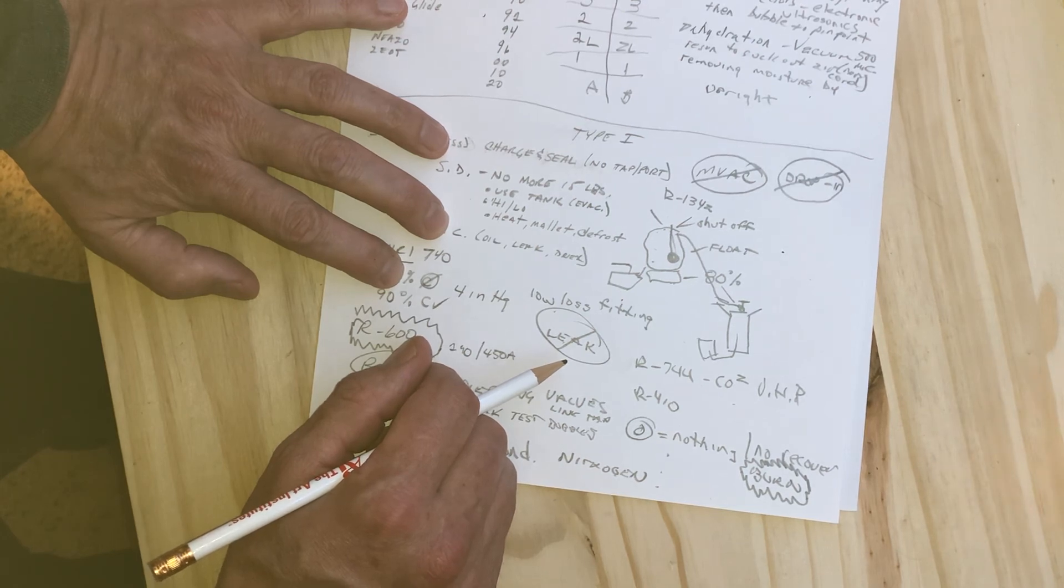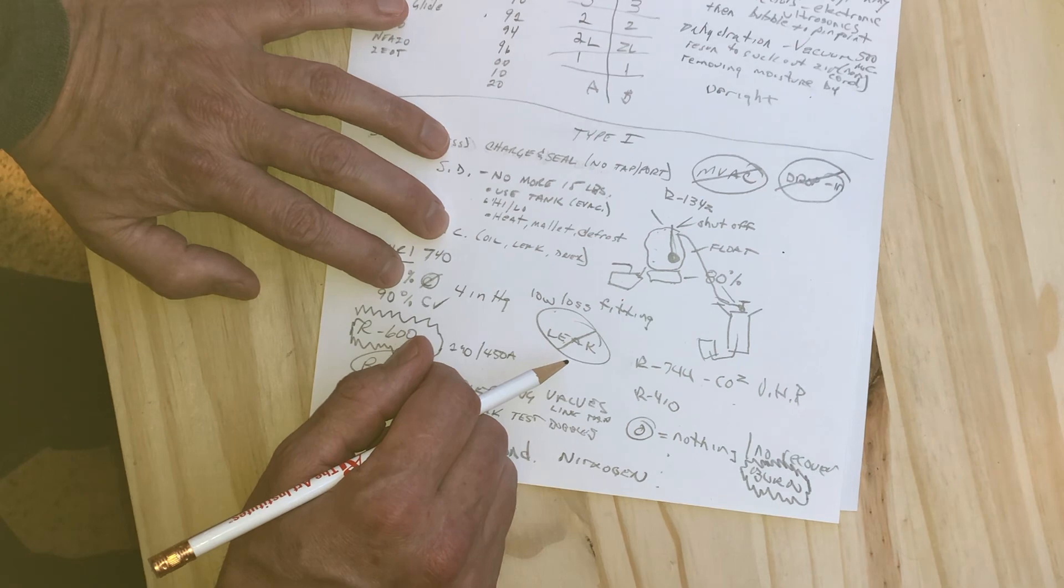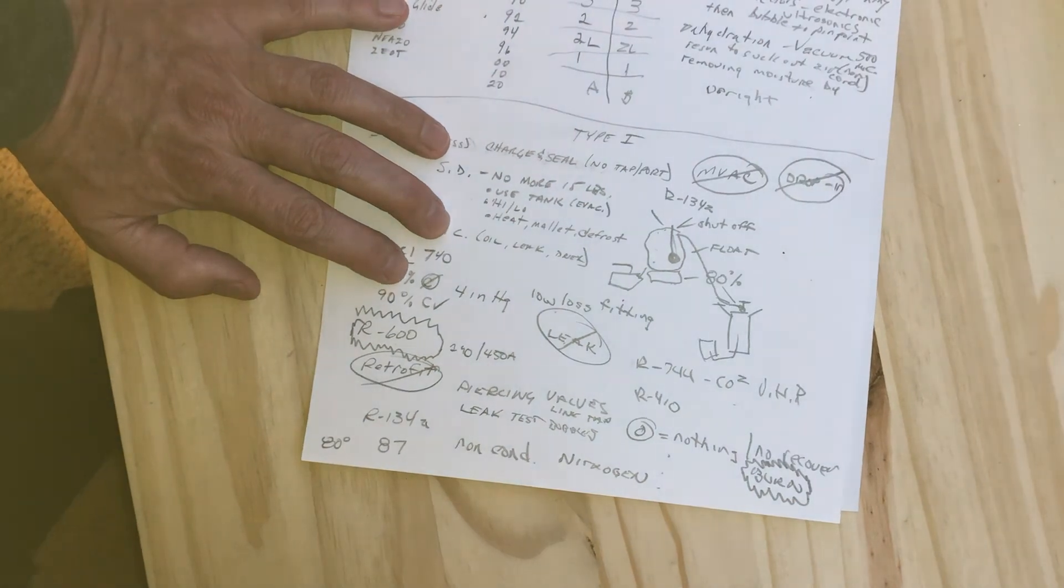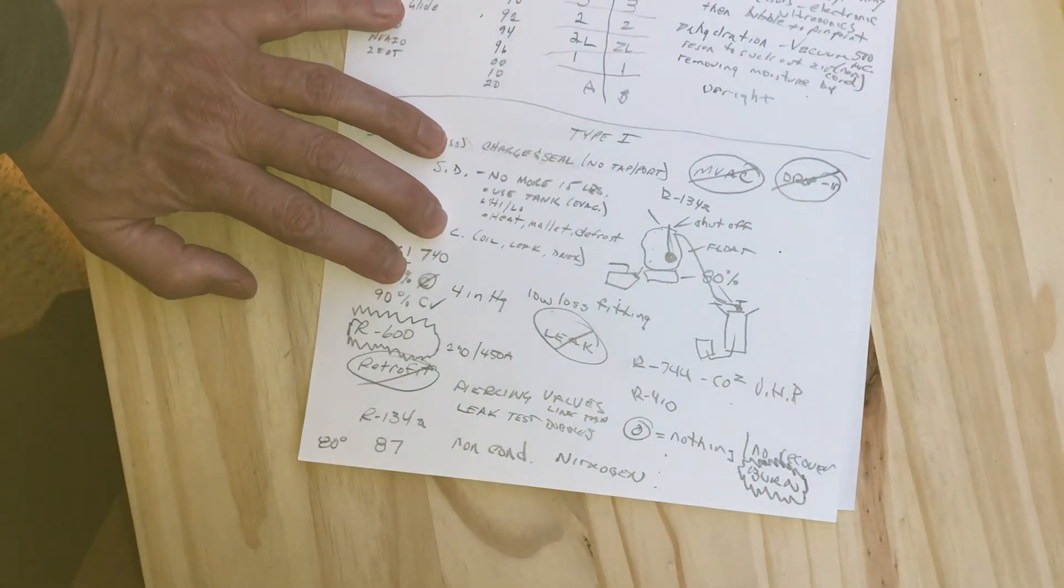That's pretty much it for the Type 1 review and summary, top 20 things you need to know. Thanks, like, subscribe, and thanks for all the comments. Appreciate you.